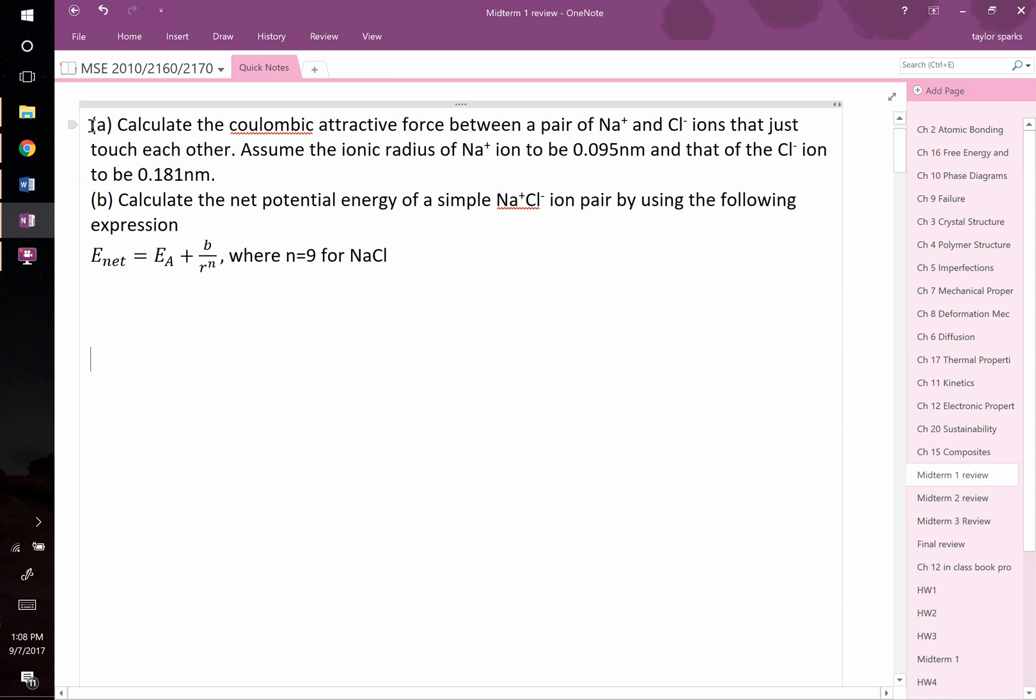For this question, we're asked to calculate the Coulombic attractive force between a pair of sodium plus and chlorine minus ions that are just touching each other. They give us information about how big these ions are. They tell us that the sodium ion is 0.095 nanometers while the chlorine ion is 0.181 nanometers. To begin on a question like this, since we're asked about the Coulombic attractive force, we should start by remembering what does that attractive force look like?